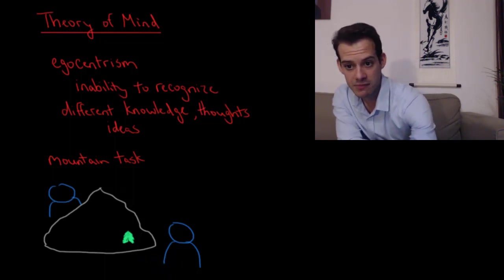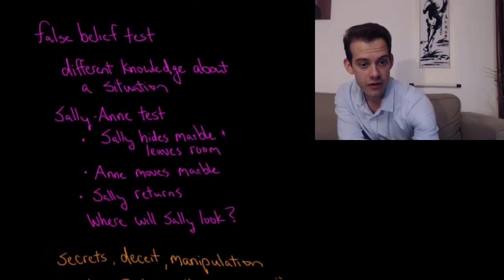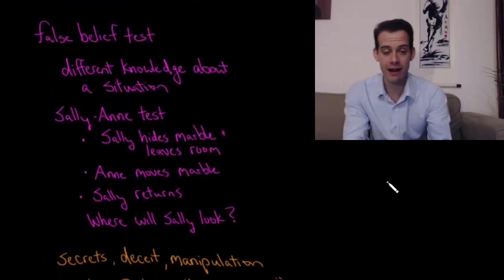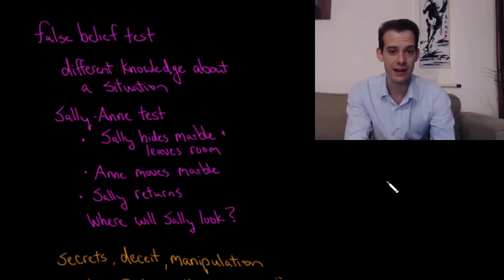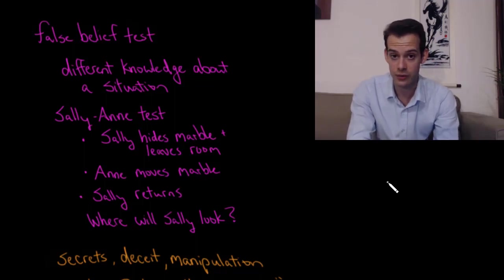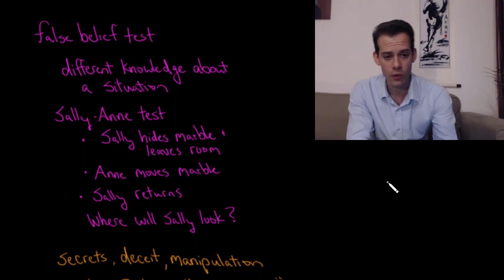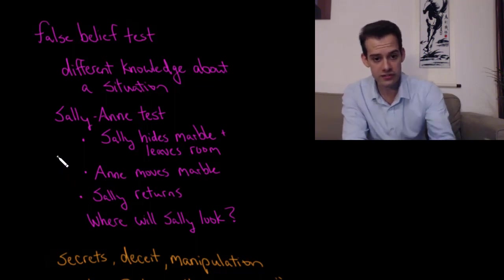Another way we can assess theory of mind is false belief tests. This is where different characters in a situation have different levels of knowledge about that situation. One very common false belief test is called the Sally Ann test. This involves two characters, Sally and Ann. This is usually done with dolls to demonstrate to children. We'll take one of the characters, Sally, will take a marble and she'll hide that marble in a basket.